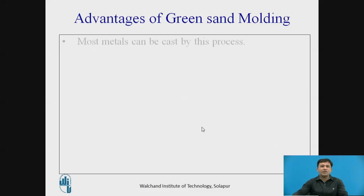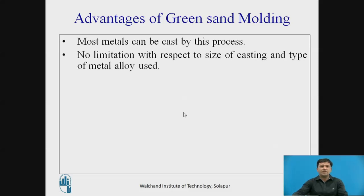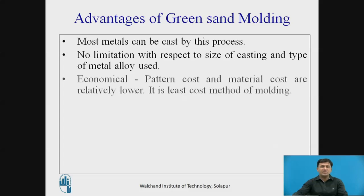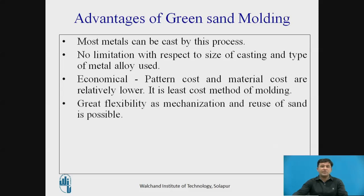Now we will understand the advantages of green sand moulding. First, almost all metals can be cast by this process. Second, there is no limitation with respect to size of the casting and type of metal alloy used — any size and any metal alloy can be used. Third, it is most economical, because pattern cost and material cost are relatively lower — it is the least cost method of moulding. Fourth, the flexibility: after the first batch is done, the same sand can be reused for the next batch, reducing cost further.